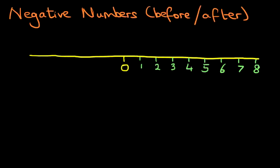Now on the left hand side, we're going to do the negative numbers. We did this in a previous tutorial, so in this one I'm just going to write them down: minus 1, minus 2, minus 3, and so on. To understand these better, please refer to the previous tutorial.